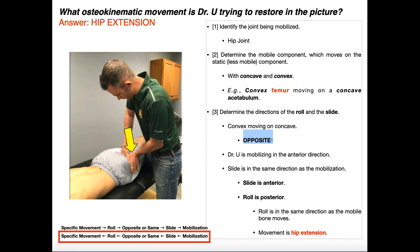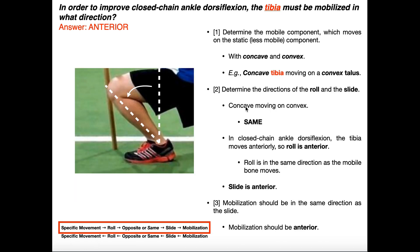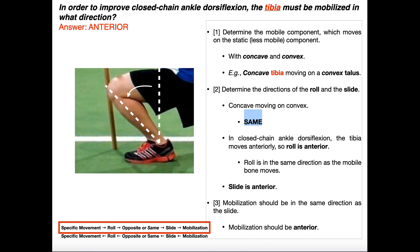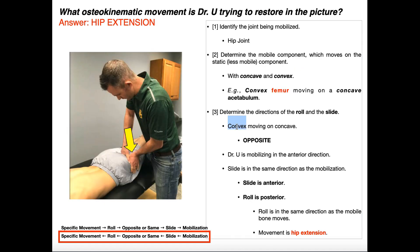If instead we had a concave bone moving on a convex bone, the roll and the slide would be in the same direction. The way to remember this is: since concave comes first, it's the only one of the two words — concave or convex — that has two of the same letter; concave has two C's, convex doesn't. So if it's concave moving on convex, roll and slide are in the same direction. But here we've got a convex bone, the head of the femur, moving on a concave bone, the acetabulum — so the roll and the slide are in opposite directions.